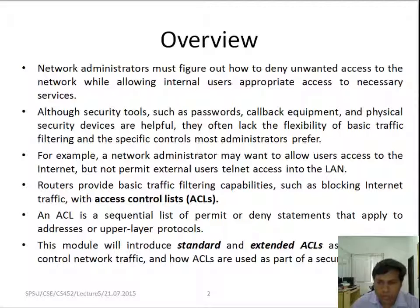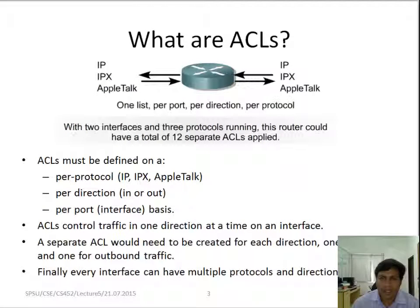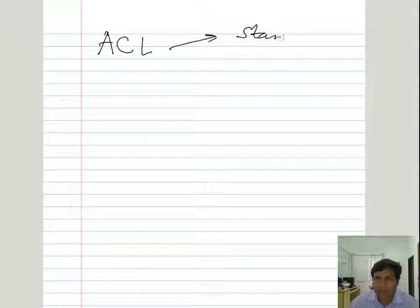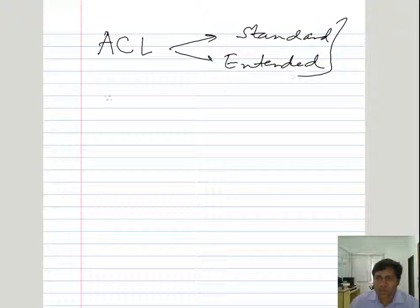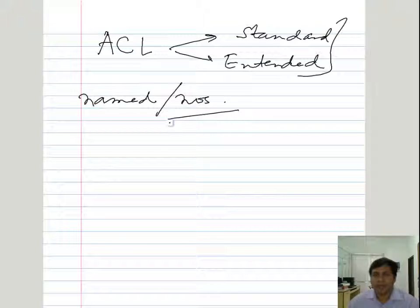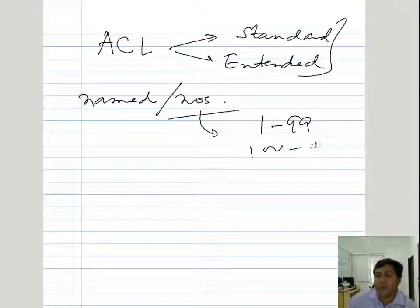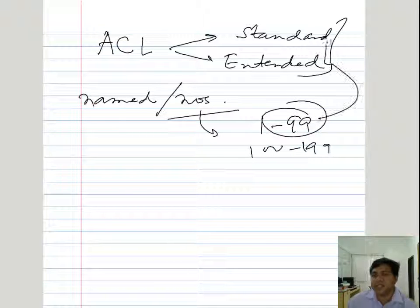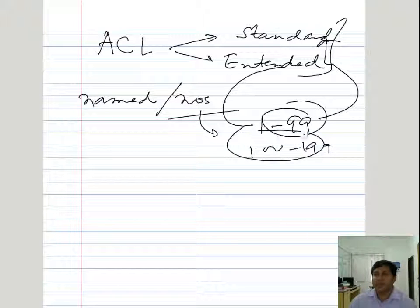We will talk about two access control lists: one is standard and one is extended ACL. ACL is access control list, there are two types — standard and extended. These two can also be in the form of name or number. If you take a number, you have to specify a number between 1 to 99 for standard, or 100 to 199 for extended ACL.